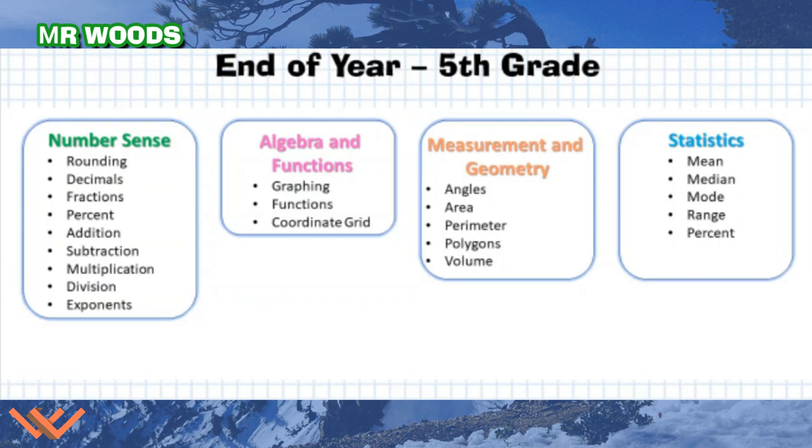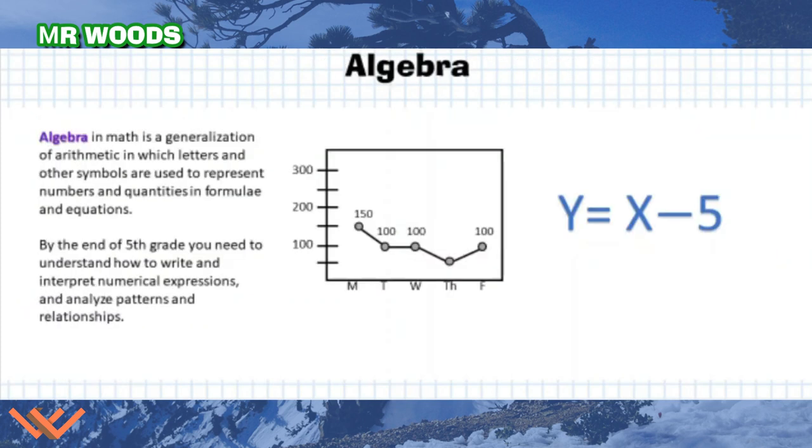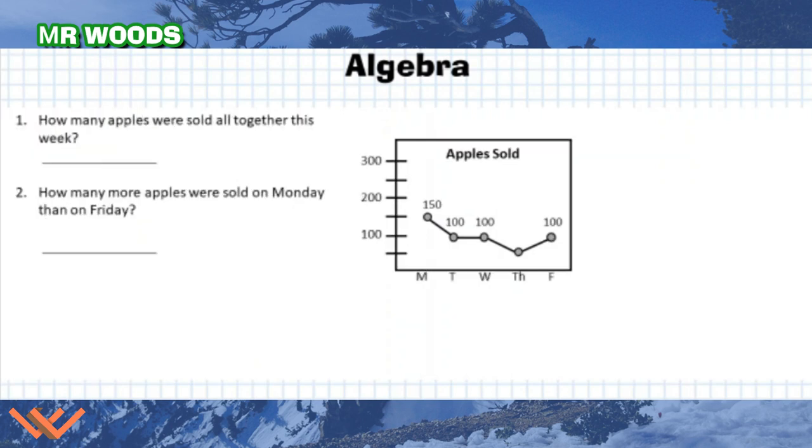and then coming will be measurement and geometry and statistics. Algebra is a generalization of arithmetic in which letters and other symbols are used to represent numbers and quantities in formulae and equations. By the end of fifth grade, you need to understand how to write and interpret numerical expressions and analyze patterns and relationships, such as in here. We have a graph. You need to understand what these marks mean, what we're looking at here, as well as to create an equation using letters and symbols. Let's dive into algebra.